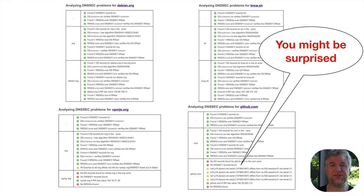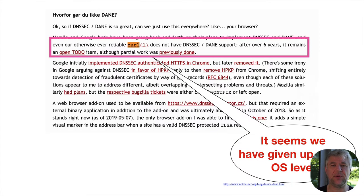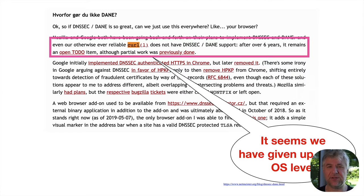If you look at some major sites — GitHub, for example — doesn't use DNSSEC, and that might worry you or not. It seems we've kind of given up at the OS level. Browsers are implementing their own DNS. So whether you check your system, you have to start at different places in your applications because they're starting to do their own DNS. It's more fragmented than you would expect.